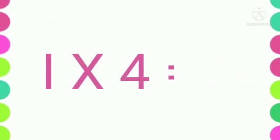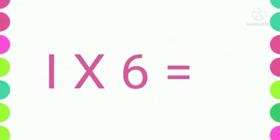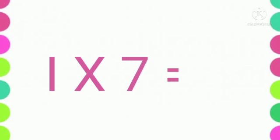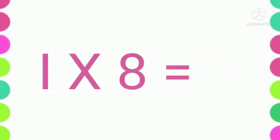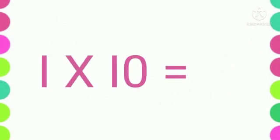One four is four. One four is four. One five is five. One five is five. One six is six. One six is six. One seven is seven. One seven is seven. One eight is eight. One eight is eight. One nine is nine. One nine is nine. One ten is ten. One ten is ten. Let us revise the table of one one more time.